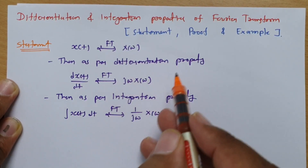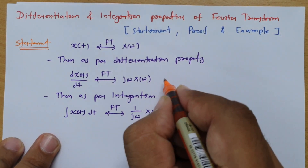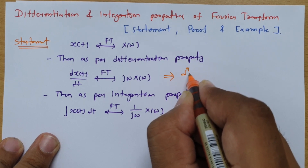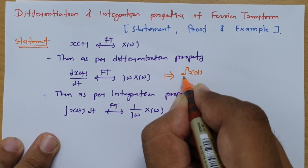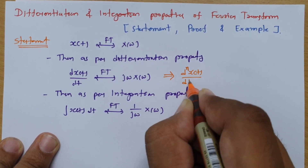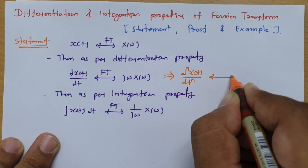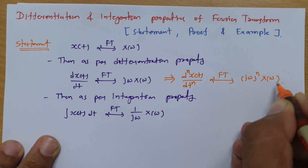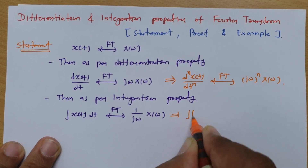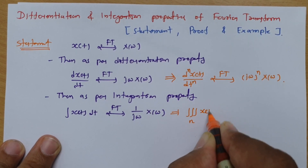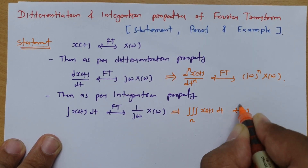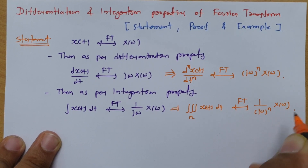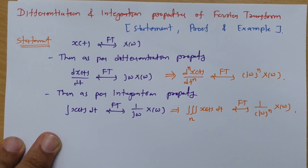For multiple differentiations, the Fourier transform of d^n x(t)/dt^n is (jω)^n · X(ω). And for n times integration of x(t), the Fourier transform is (1/jω)^n · X(ω). So this is what differentiation and integration property states.